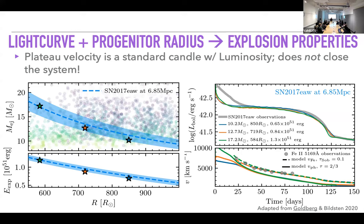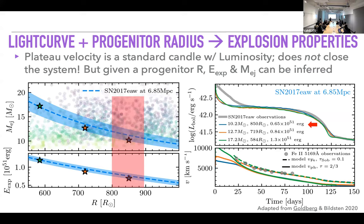That's why some people are trying to use Type IIPs as standard candles based on the luminosity-velocity relation. But if you have a progenitor radius measurement — as we did for SN 2017eaw — you can actually constrain the explosion energy and ejecta mass. Without that, you get bands of what's plausible. At very early times, velocities probe the outermost material, which might provide a third constraint to close the system — though it's hard to measure early velocities and we need to think about where that emission comes from.